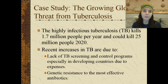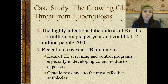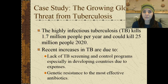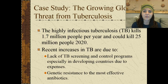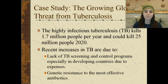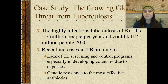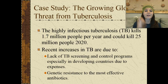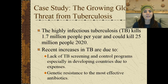Looking at the case study of the growing global threat from tuberculosis: TB kills 1.7 million people per year and could kill up to 25 million people by 2020. Recent increases in tuberculosis are due to the lack of TB screening and control programs, especially in developing countries where testing is expensive, and also due to genetic resistance to the most effective antibiotics. The bacteria causing tuberculosis is starting to become resistant to those antibiotics.